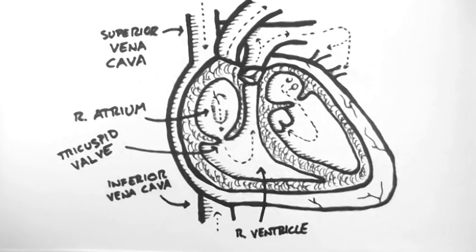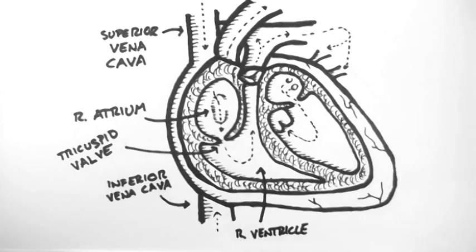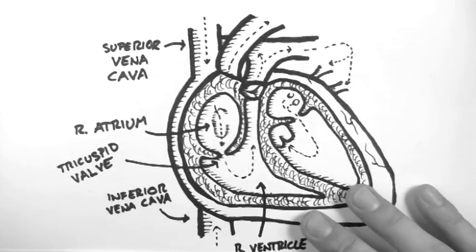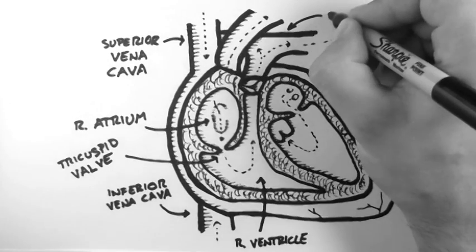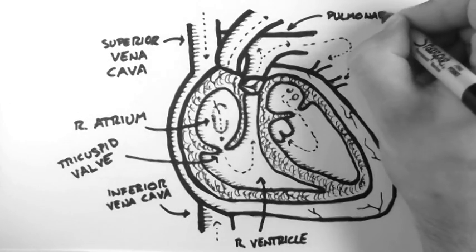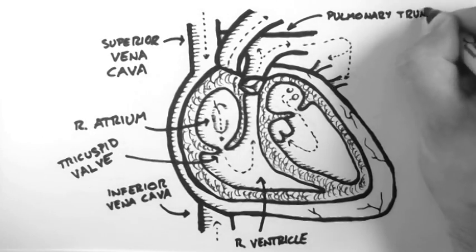Blood then flows out of the right ventricle, through the pulmonary valve, into the pulmonary trunk. At this point it goes to the lungs.